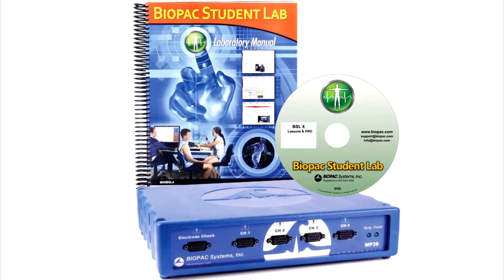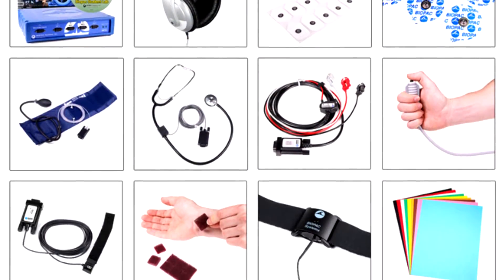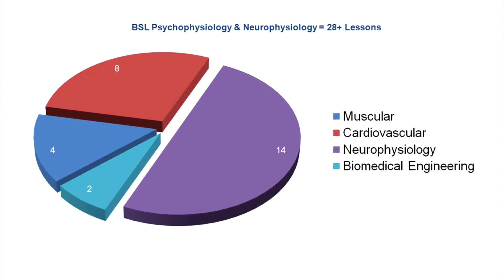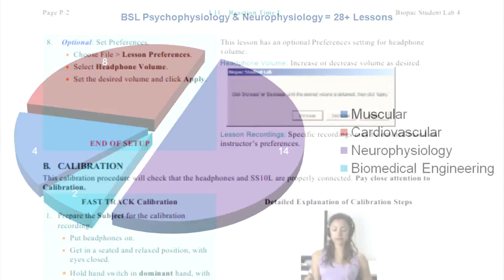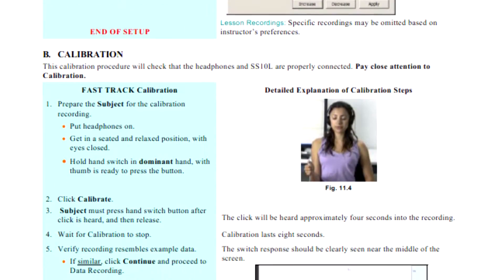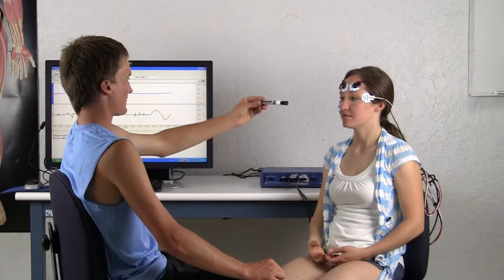This overview details the components included in the BSL psychophysiology and neurophysiology system. With over 28 targeted lessons from the BSL laboratory manual and BSL pro lessons, this package includes everything needed to support additional active learning segments in those lessons or student design experiments.